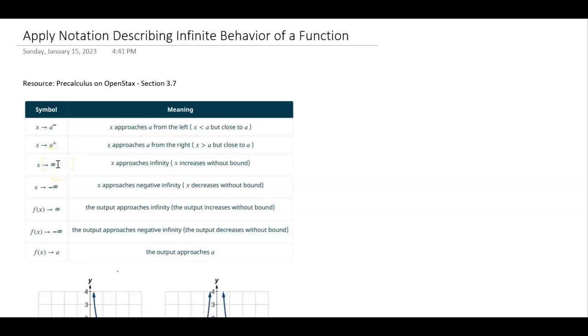This says that x goes to infinity. This says x goes to negative infinity. Notice that these are all about x. Down here, these are all about f of x. So these are going to be input values getting close to these values of either A or negative or positive infinity.